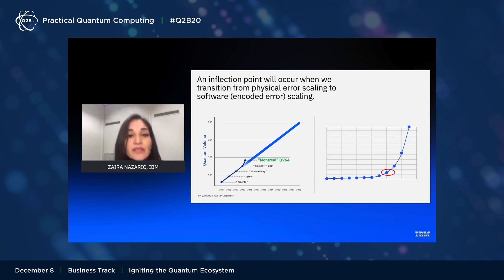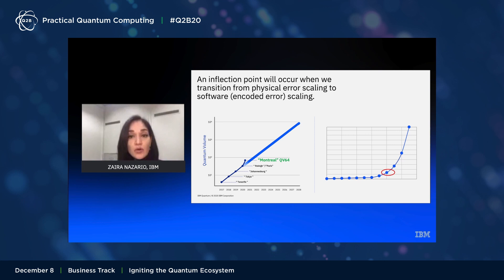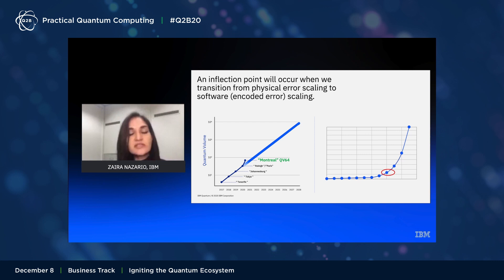By allowing us to investigate quantum error correcting codes, Condor will take us closer to an inflection point — a change in the scaling of quantum volume. If the errors in the operations applied to the qubits are small enough, we would transition from progress being limited by errors in physical operations on qubits to progress dominated by software and errors in the operation of logical qubits, which are the qubits encoded in codes to correct errors. That would be a game changer in terms of capabilities and quantum advantage.